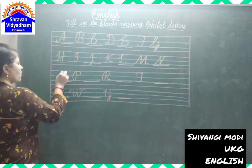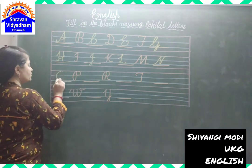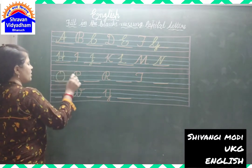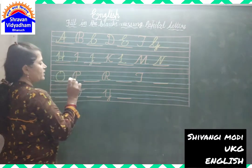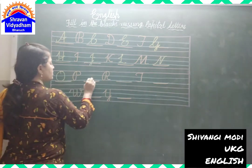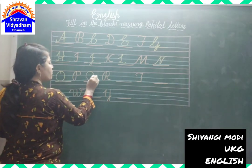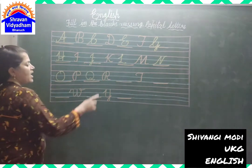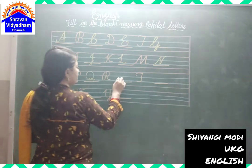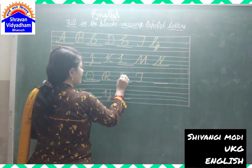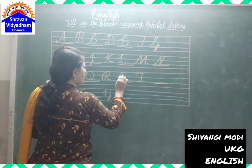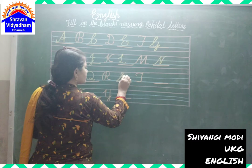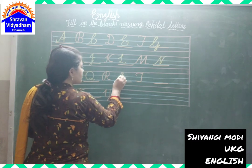O for Orange. P for Parrot. Q for Wind. R for Rabbit.